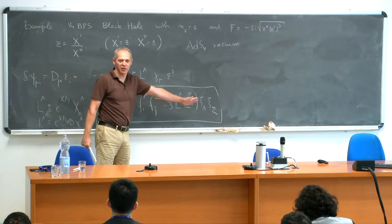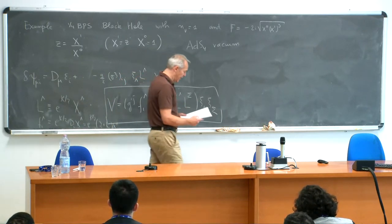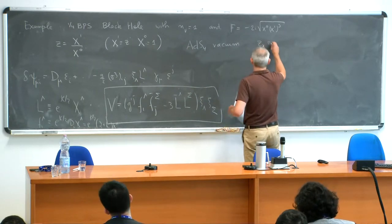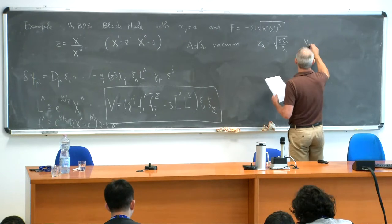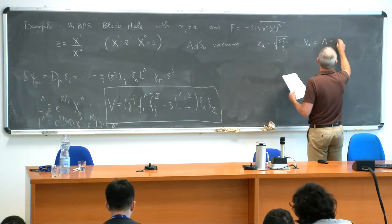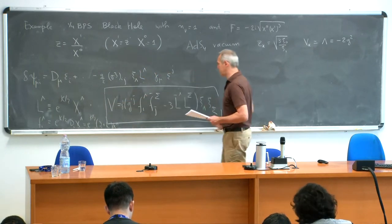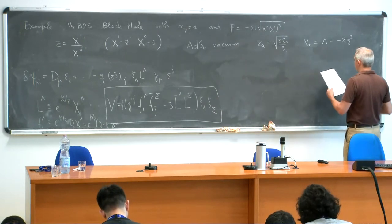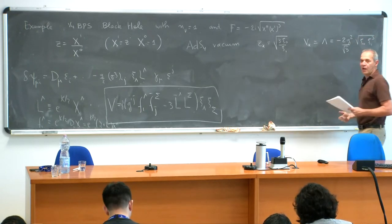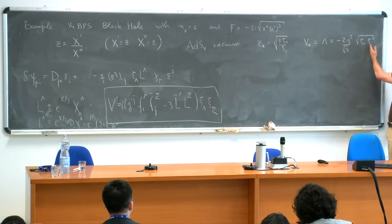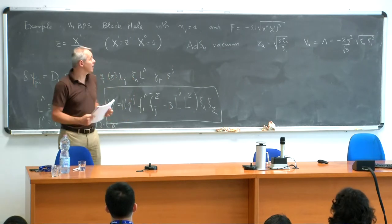Before writing down the black hole solution, you have to find the extrema of this potential and verify there is an AdS vacuum. In this case the coordinate Z is simply X^1 / X^0, with X^0 = 1. You just extremize the potential — it's a function of z, z-bar, and the xi's — and find an AdS vacuum for a constant scalar: z_* = (3 xi^0 / xi^1). The value of the potential at this extremum is the cosmological constant: Lambda = -2g^2 / sqrt(3 xi^0 (xi^1)^3). This preserves all the supersymmetries. That's step number one.